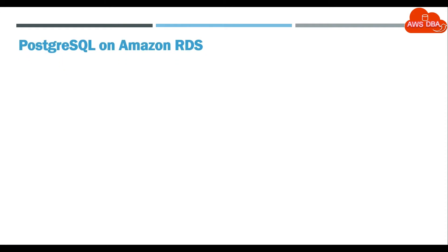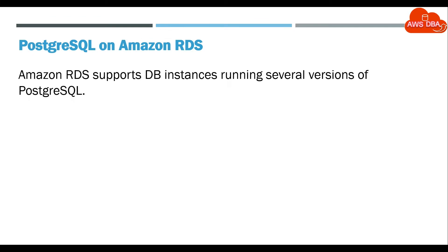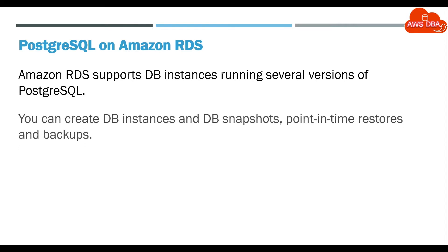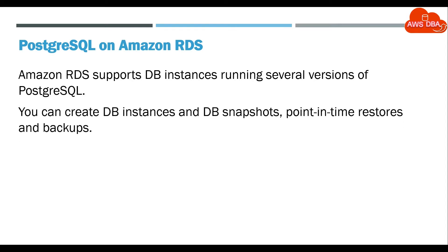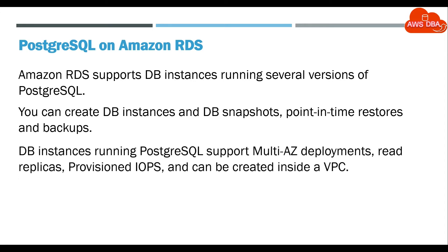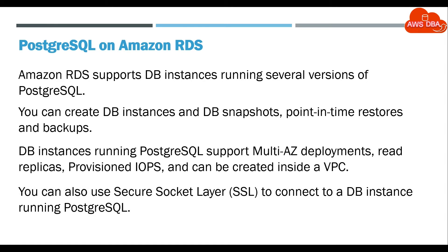Amazon RDS supports DB instances running several versions of PostgreSQL. You can create DB instances and DB snapshots, point-in-time restores and backups. DB instances running PostgreSQL support multi-AZ deployments, read replicas, provisioned IOPS, and can be created inside a VPC. You can also use Secure Socket Layer, SSL, to connect to a DB instance running PostgreSQL.